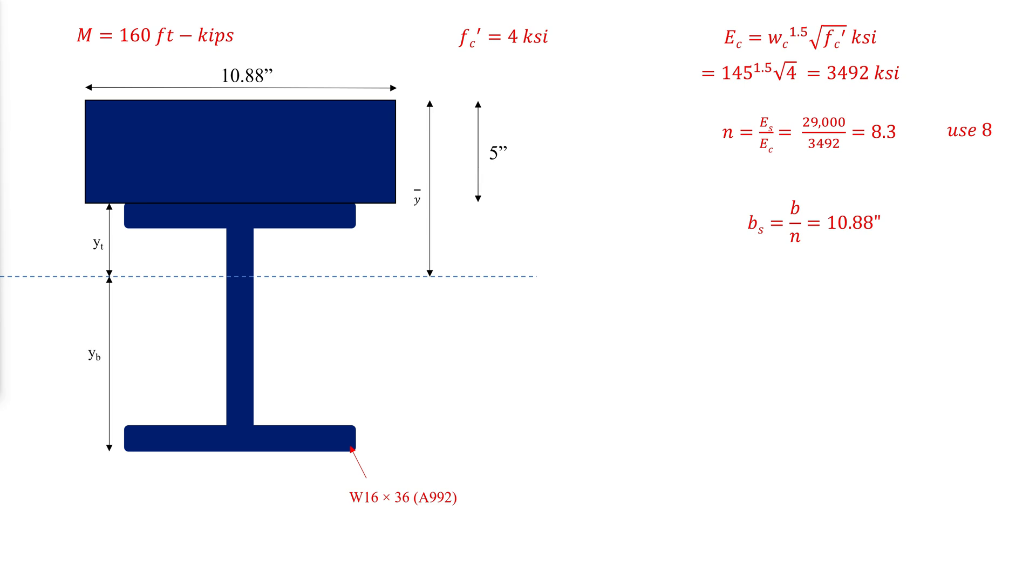The height of the beam is known and can be obtained from table 1-1 of the AISC construction manual. The location of the neutral axis can be found by applying the principle of moments with the axis of moments at the top of the slab.